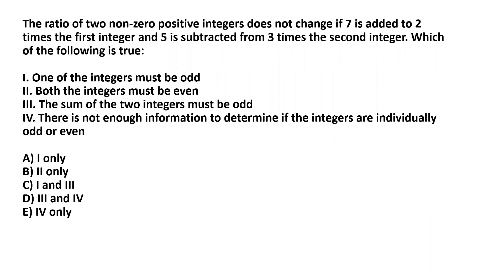We are given four statements which mainly concern whether one or more of the integers are either odd or even, and also if the sum of the two integers is odd. Statement four states that there isn't enough information to determine if the integers are individually odd or even. We are given five options to pick the correct choice depending on which statements are true. This is a very typical question from GMAT or GRE quantitative reasoning.